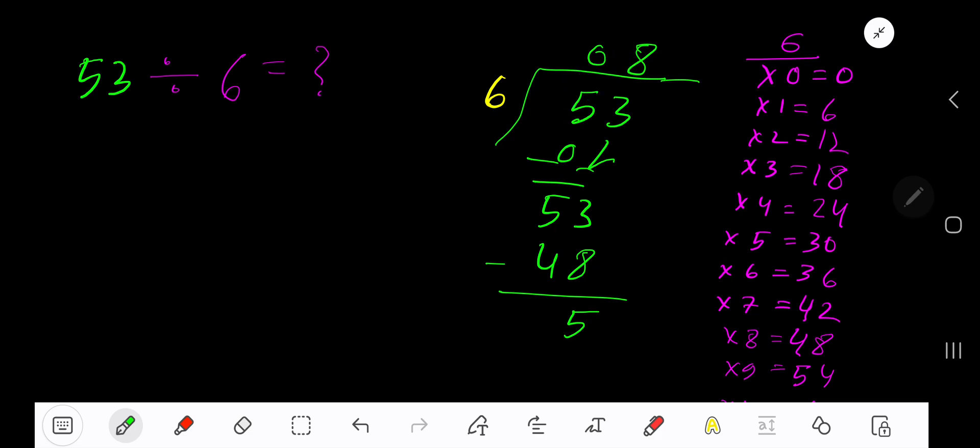So our answer should be 0, 8 means 8. Remainder 5.